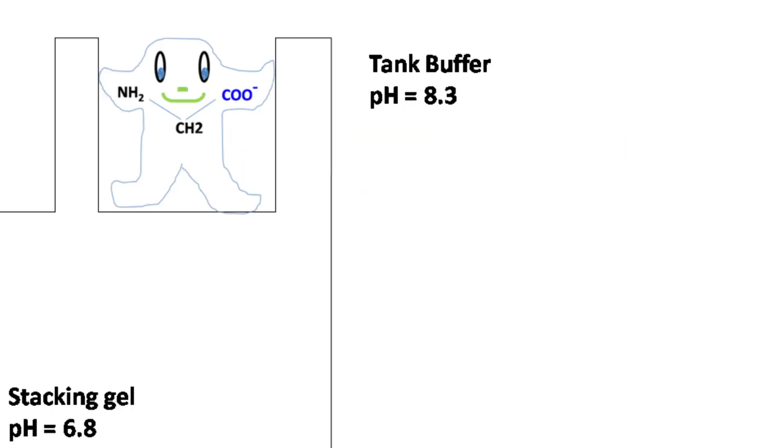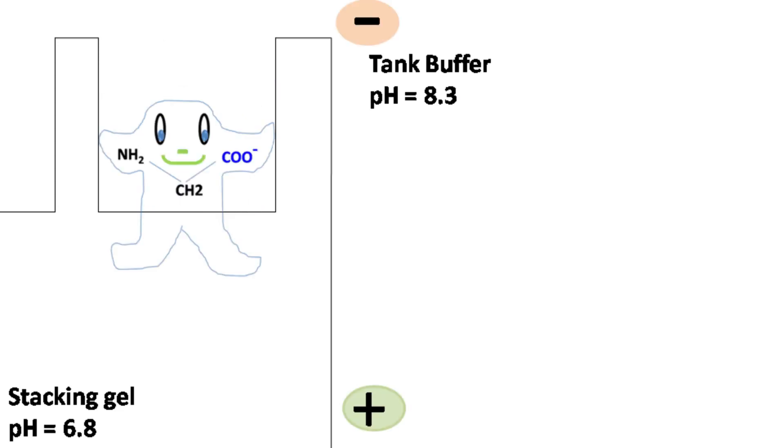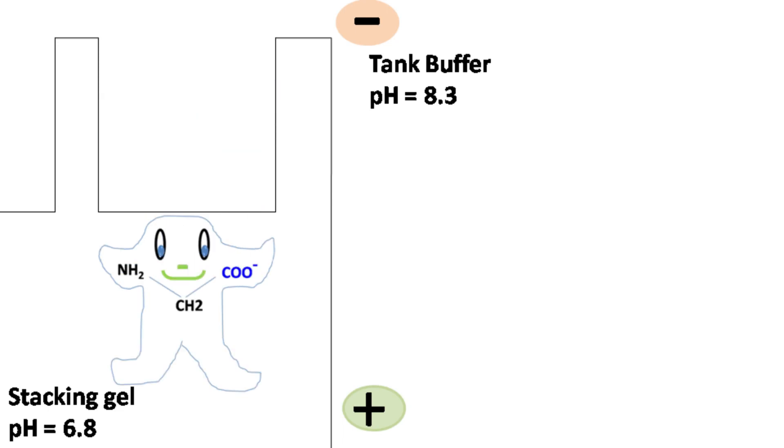Now the tank buffer has a pH of 8.3. It means glycine in the tank buffer is gonna have a net negative charge. Now when the electric field is switched on, the glycine from the tank buffer starts entering the stacking gel. The pH of stacking gel is 6.8, which is near neutral. And so glycine is gonna have a positive as well as negative charge.